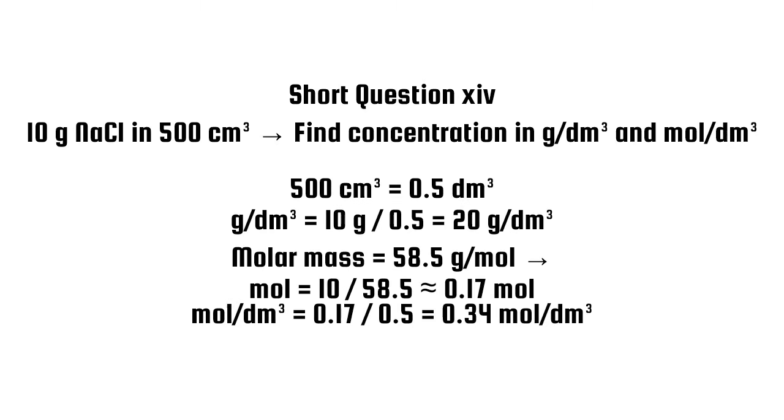Short question 14. 10G NaCl in 500 cubic centimeters, find concentration in g per dm cubed and mole per dm cubed. Molar mass equals 58.5 grams per mole. Moles equals 10 divided by 58.5 almost equals 0.17 mole. Moles per dm cubed equals 0.17 divided by 0.5 equals 0.34 mole per dm cubed.